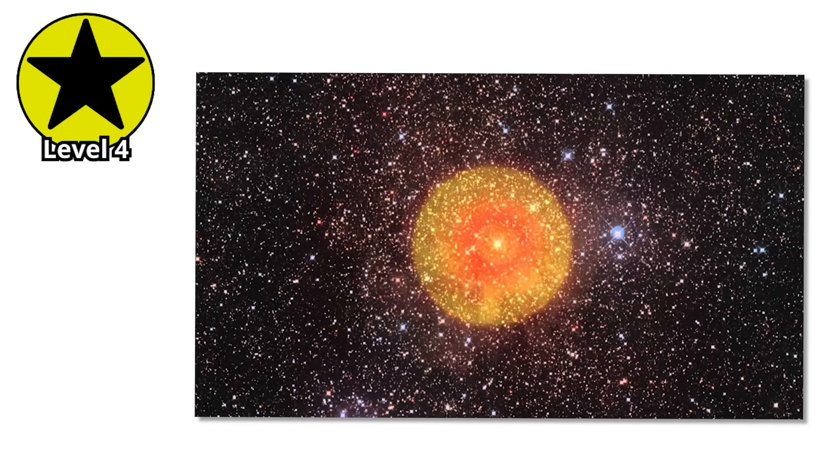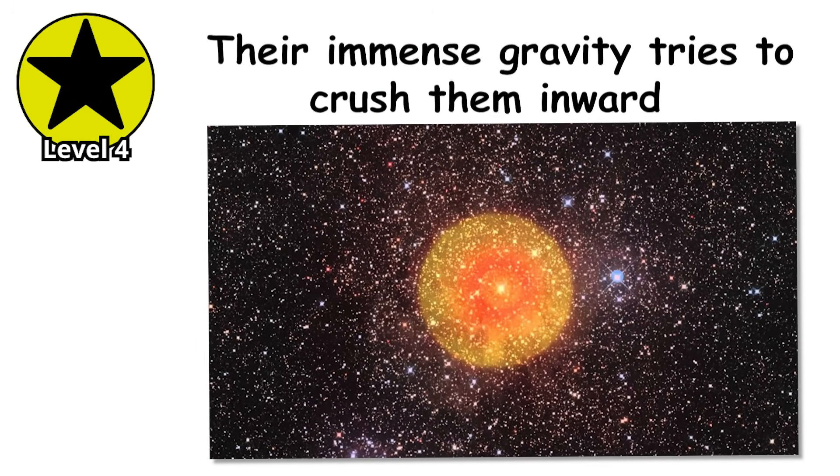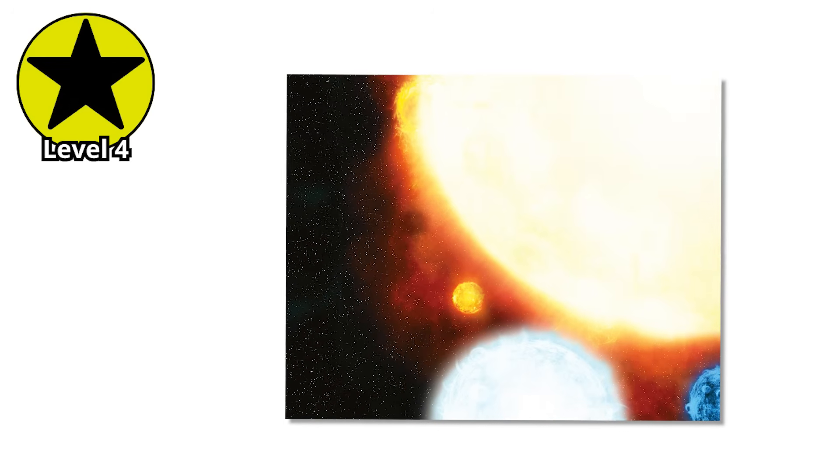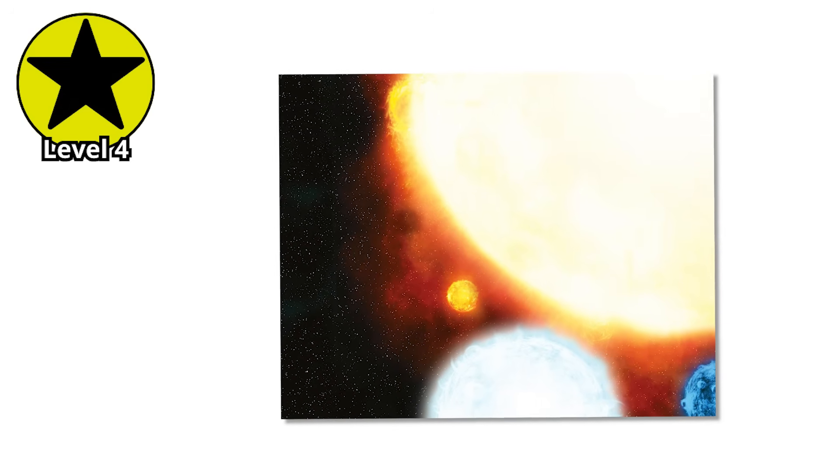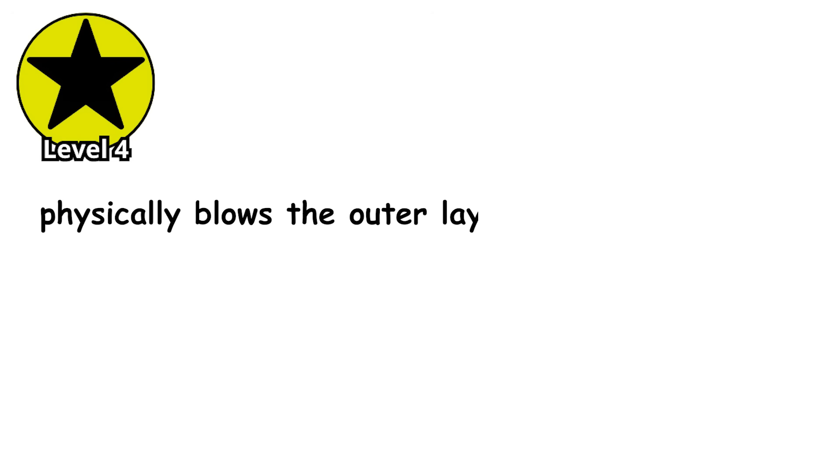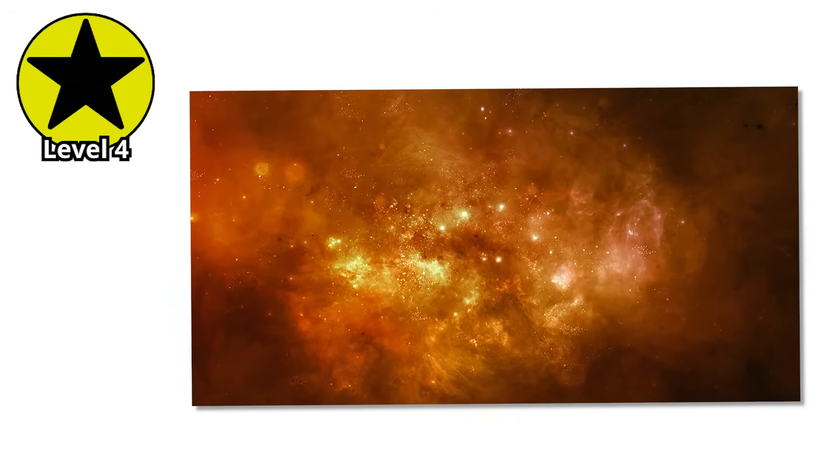Hypergiants exist in a precarious balance. Their immense gravity tries to crush them inward, while the furious nuclear fusion in their cores pushes outward with radiation pressure. The radiation is so intense that it physically blows the outer layers of the star away in powerful stellar winds, shedding mass constantly. They're essentially bleeding to death, losing material into space while still trying to hold themselves together.